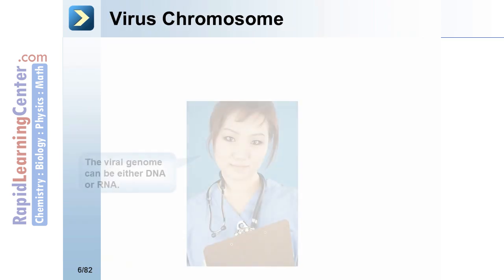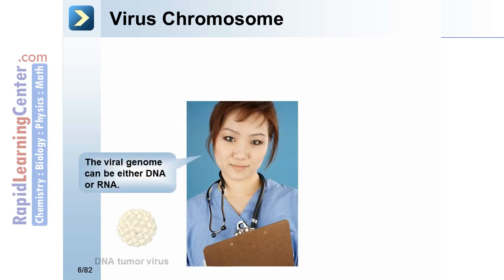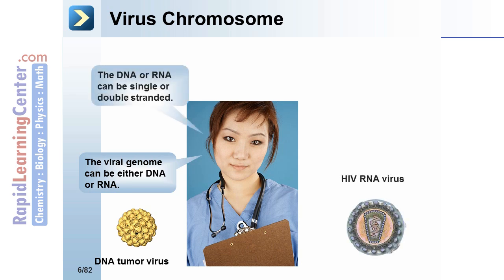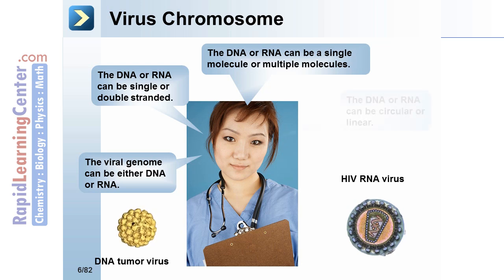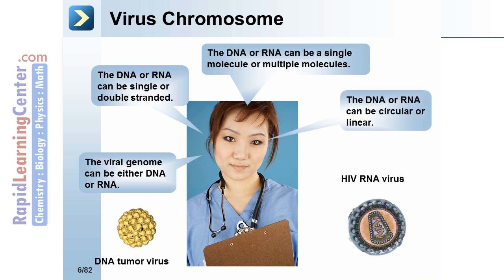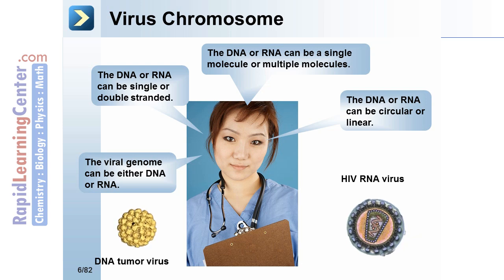Virus chromosome. The viral genome can be either DNA or RNA. This is a schematic of a DNA tumor virus. HIV is an RNA virus. The DNA or RNA can be a single molecule or multiple molecules, and can be circular or linear.